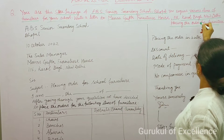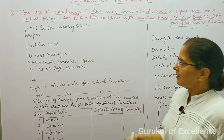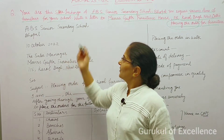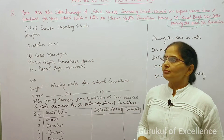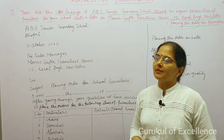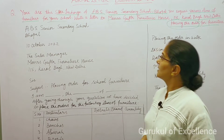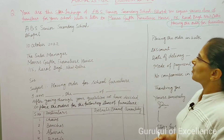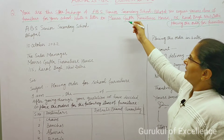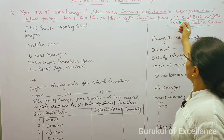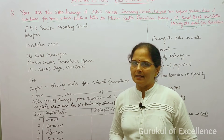What type of letter is this? It is a placing-the-order type. You are the store in charge, and you need furniture for the school, so you have to place the order from Messrs Gupta Furniture House, 1-1-5 Karol Bagh, New Delhi.